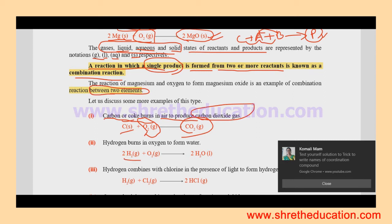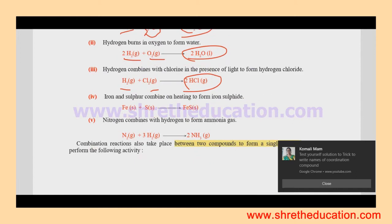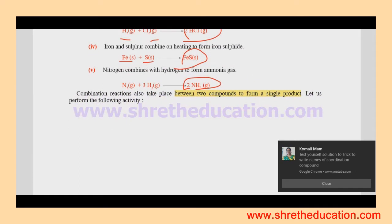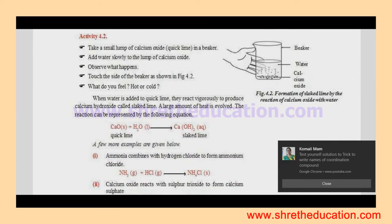For example, water formation from hydrogen and oxygen. Then hydrogen and chlorine combine to form HCl. Iron and sulfur react to form FeS. Nitrogen and hydrogen react to form ammonia. These are examples of reactions between two elements that combine.